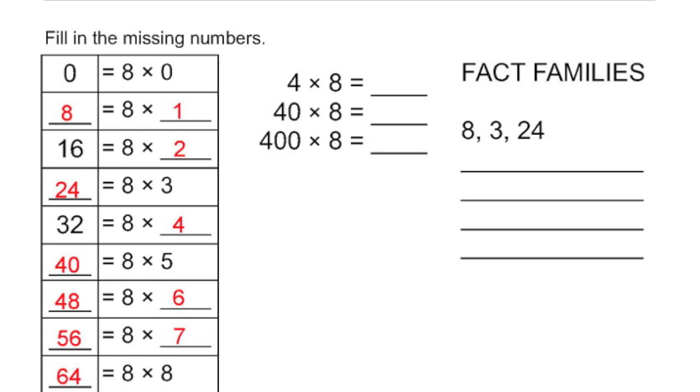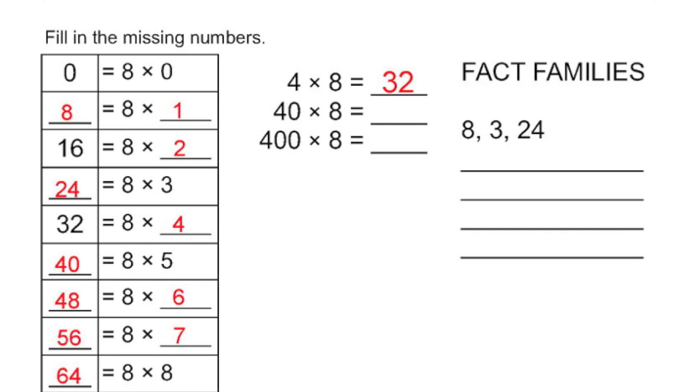Let's move on to the power of 10 exercise. I see 4 times 8, 40 times 8, and 400 times 8. I know that 4 times 8 is 32. So 40 times 8 is going to be very similar. You're multiplying that by 10. 4 to 40 is 10 times. So 32 gets multiplied by 10, basically adding one zero. It's 320.